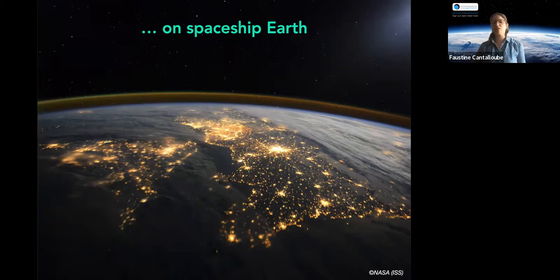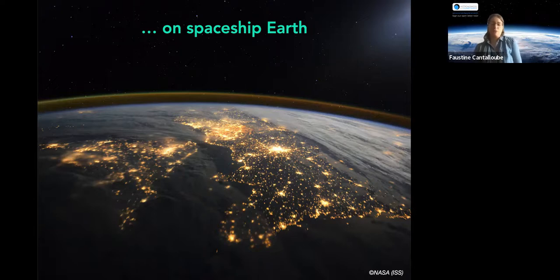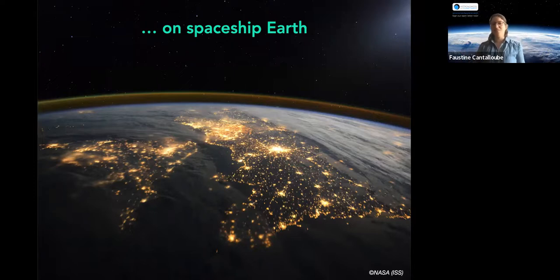You see this thin layer of atmosphere — the blue layer is about 90 to 100 kilometers altitude — and everything below that contains basically everything we know about life, everything that exists and that we still don't know about. Everything happens here on Spaceship Earth, and that's this tiny little thing that maintains all we know today.